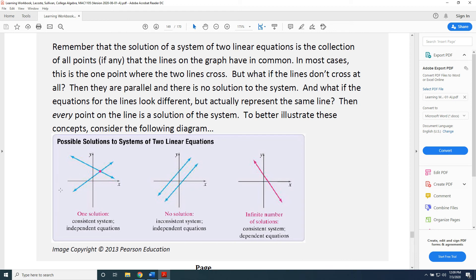Possible solutions to systems of two linear equations. If you've determined that there is one solution, which is a consistent system with independent equations, then when you graph both lines, you should see a diagram that looks like this. Two lines that cross at a single point.